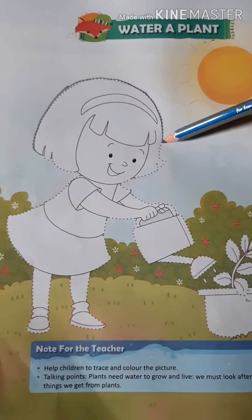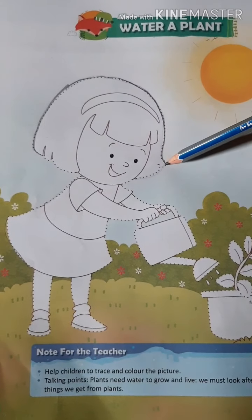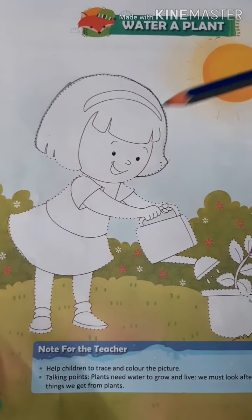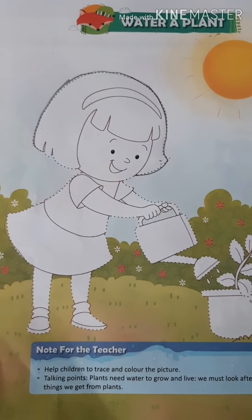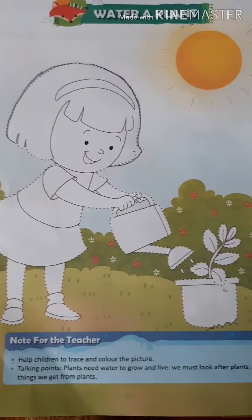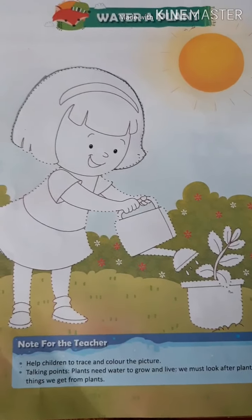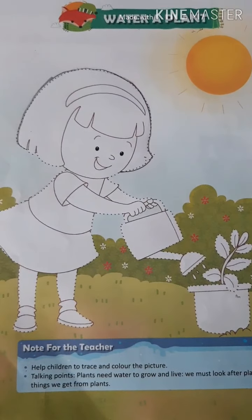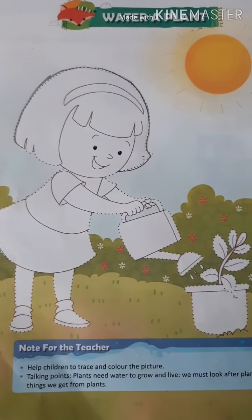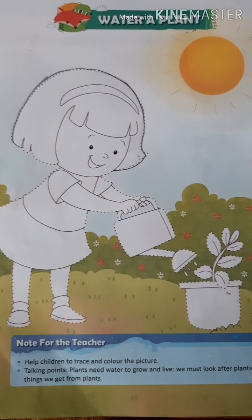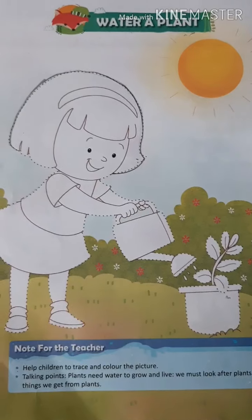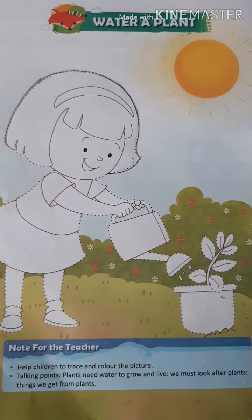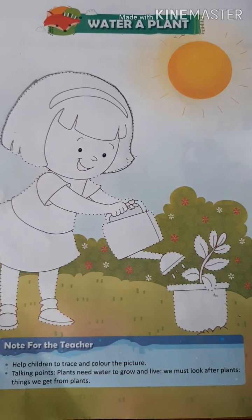Today we will learn what are the things a plant needs to grow. Plants need water, sunlight, and soil.